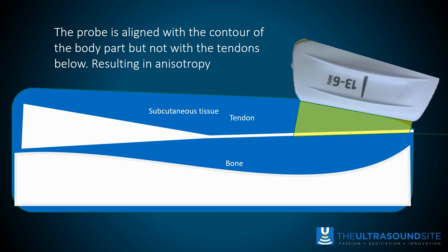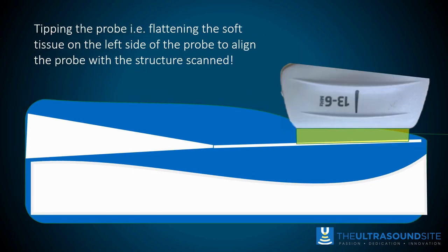An important top tip: when scanning, don't align the probe relative to the surface of the skin or soft tissue — consider the target structure you're actually trying to scan. In the image shown, the probe is resting on top of the skin but is not perpendicular to the target structure. By toeing in and manipulating the probe so it's perpendicular to the structure being scanned, you'll get a much better image. Remember: think about your target structure under the skin and the probe's relative angle to it, not how it sits on the skin.